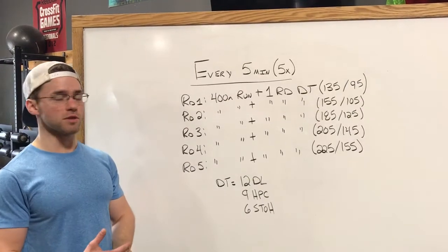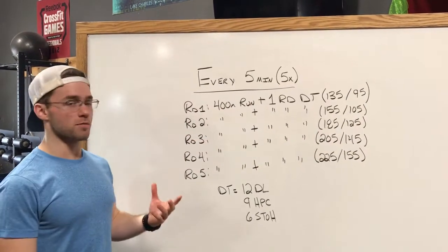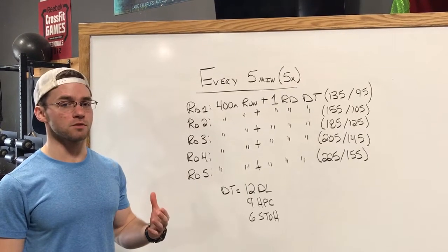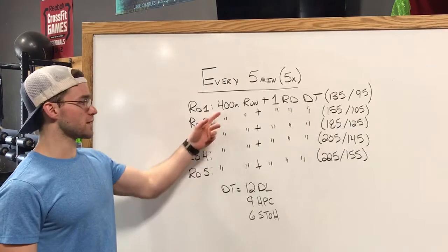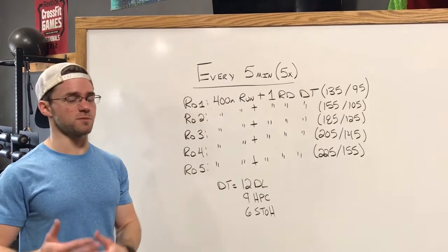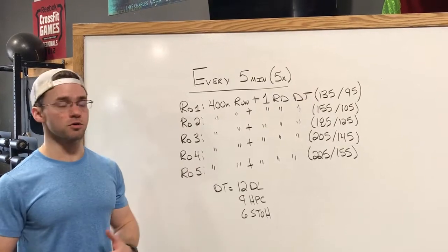So there's a couple components to this workout. With the run, if that 400 meter run is starting to push around three minutes or a little over, we want to scale the run volume back. We're shooting for 90 seconds to two and a half minutes. If we're pushing over that, we'll scale that run back to 300 or 200 meters.